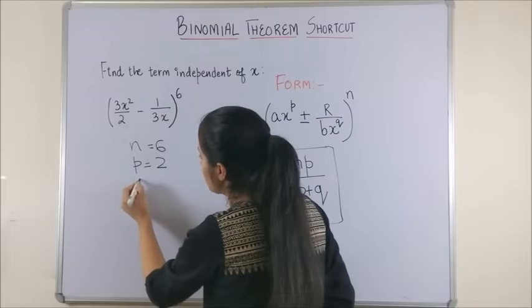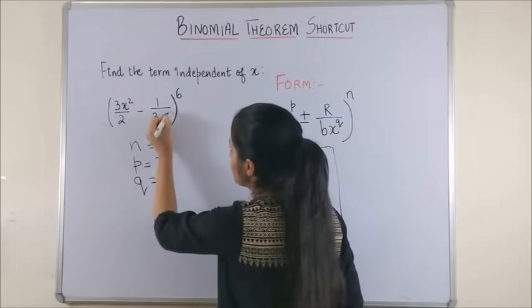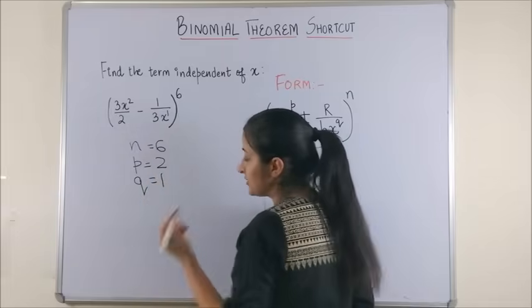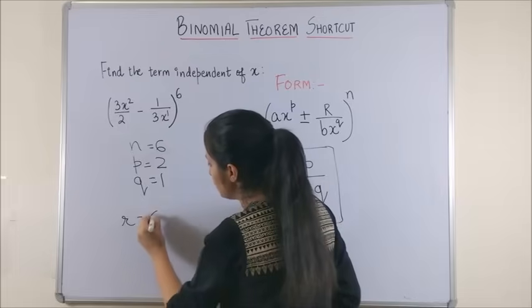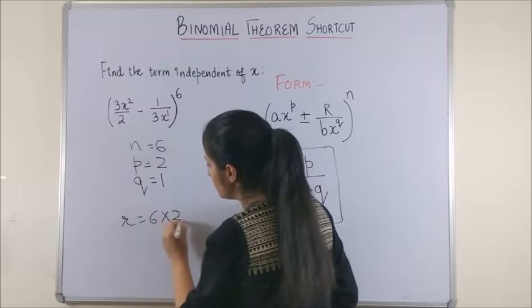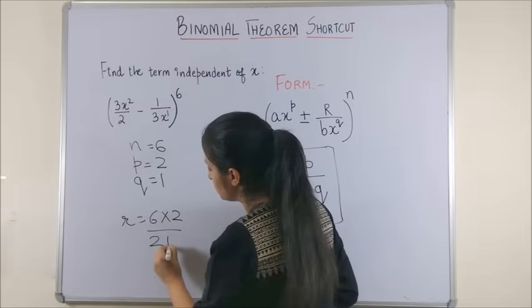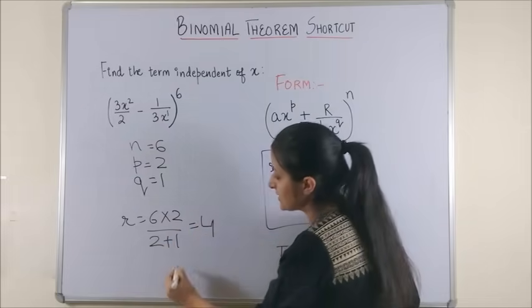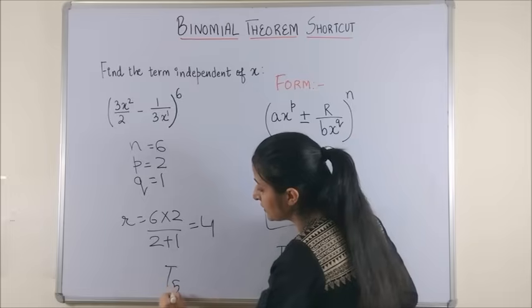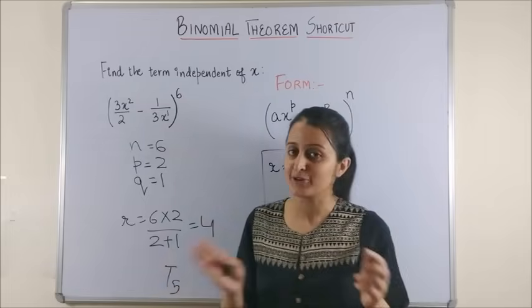And now, your q over here is just 1. So that's it. My r became n into p which was 6 into 2 upon p plus q. So this gives you 4 as the answer. Then, you know the 5th term becomes the term independent of x.